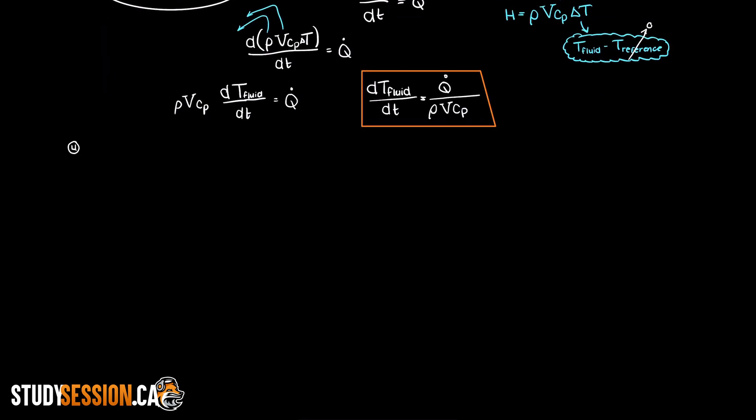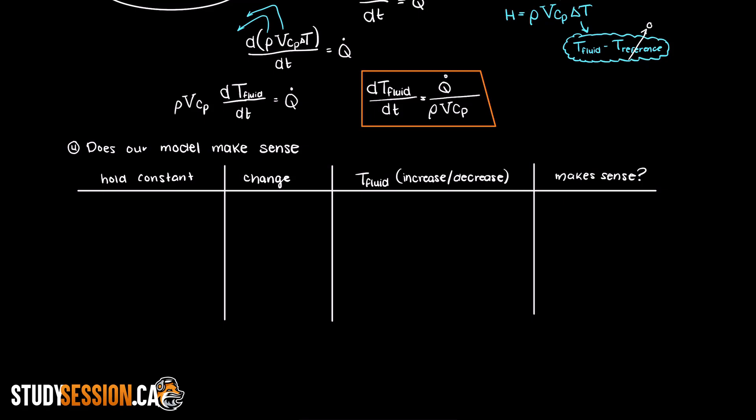Alright, so let's first make sure that this simple model actually makes sense. Here we select all potential constants and variables and hold them constant, while altering only one value and seeing if the expected behavior is returned to us. Well, as you can see here,